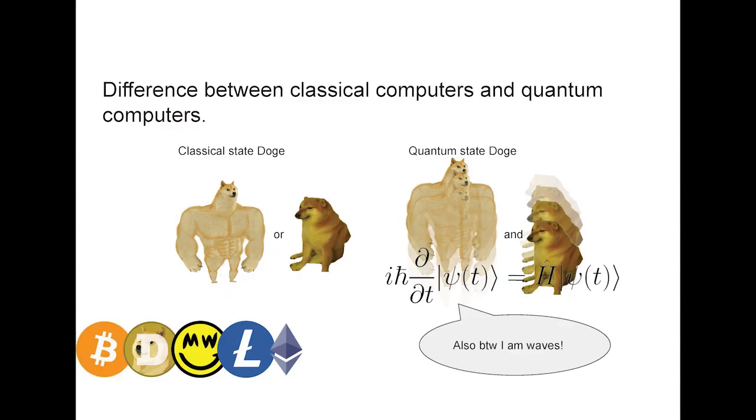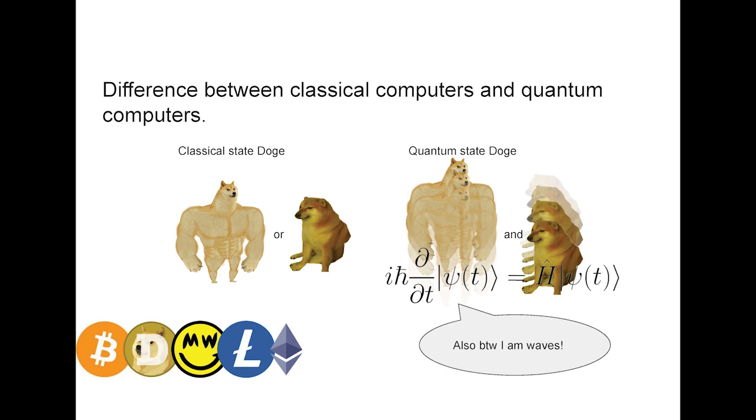Regarding the difference between classical and quantum computers, all you need to know here is that for classical computers, which have classical state, the classical state can have only one value at a time, so either the big doge or the small doge. For the quantum computers, they can have quantum states and they can be in superposition of many outcomes. And the quantum computers are governed by Schrödinger wave equation. And that's all we're going to say about this.